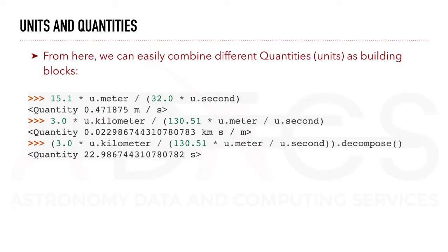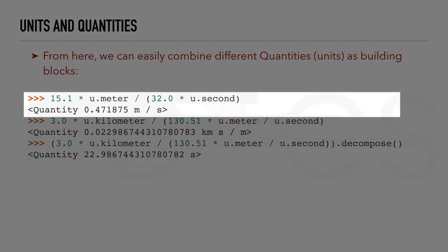From here, we can easily combine different quantities, units, as building blocks. For example, 15.1 times meter divided by 32 times second will give us the result in meters per second.